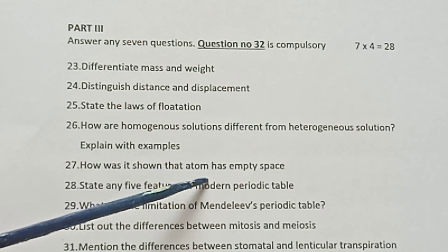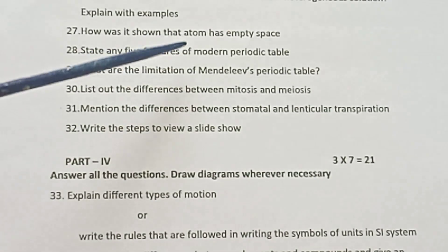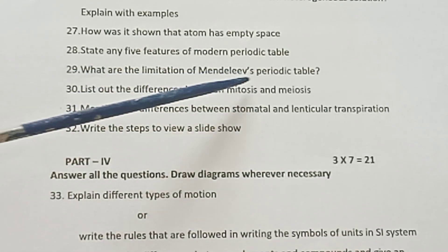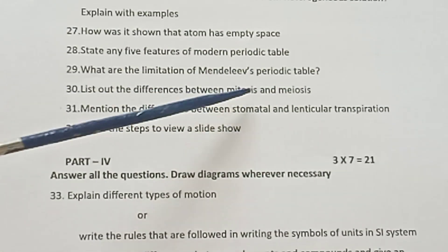Question 27: How was it shown that atom has empty space? Question 28: State any five features of modern periodic table. Question 29: What are the limitations of Mendeleev's periodic table? Question 30: List out the differences between mitosis and meiosis.